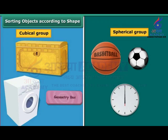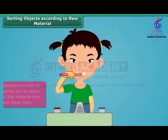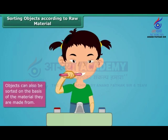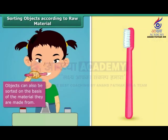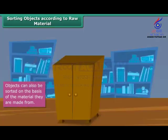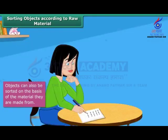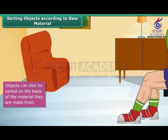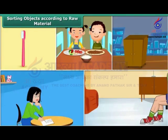The first object you use as soon as you wake up is your toothbrush — it is made up of plastic. The plate you have your breakfast in is made of melamine or stainless steel. The cupboard you keep your books or clothes in is made of iron or wood. The books that you read are made of paper. The shoes you wear are made of leather, canvas, or rexin. Thus, all the objects we use in our day-to-day life can be classified on the basis of the raw materials used in making them.